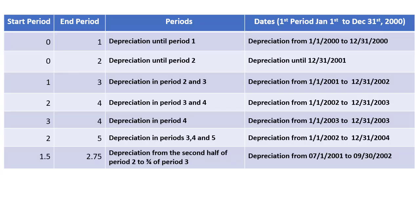This table explains the usage of start period and end period. 0 to 1 gives depreciation until period 1. 2 to 4 gives depreciation in periods 3 and 4. 3 to 4 gives depreciation in period 4. 2 to 5 gives depreciation in periods 3, 4, and 5. 1.5 to 2.75 gives depreciation from the second half of period 2 to the three-quarter point of period 3.